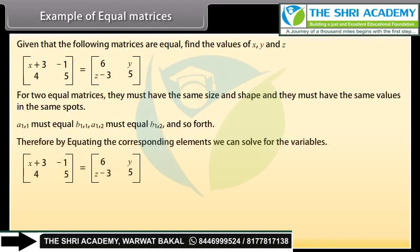Therefore, by equating the corresponding elements we can solve for the variables: x plus 3 equals 6, so x equals 3; y equals minus 1; z minus 3 equals 4, so z equals 7.